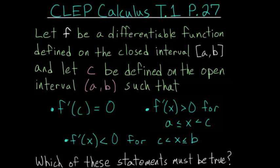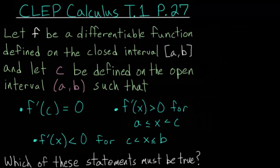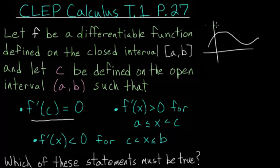Before we look at those statements, let's get a better idea of what we have. The first condition tells us that the derivative evaluated at point c is equal to 0. The derivative essentially tells us the slope of the tangent line at any given point. So at point c, the slope of the tangent line equals 0 — meaning we have a horizontal tangent line at that point.